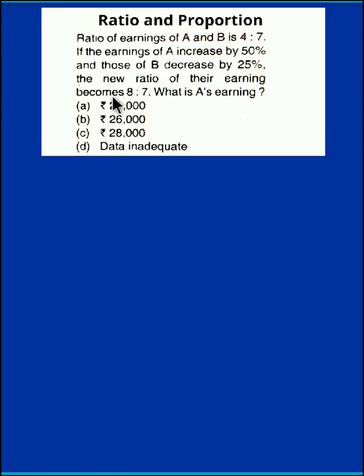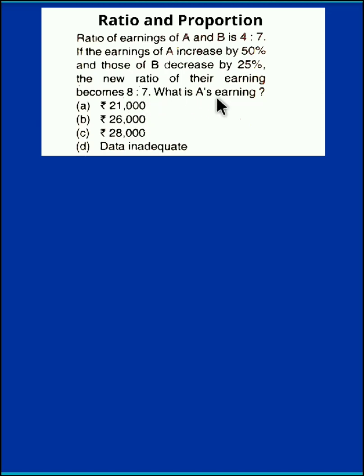Hello and welcome back. We now discuss an example from ratio and proportion. The question is: the ratio of earnings of A and B is 4:7. If the earnings of A increase by 50 percent and those of B decrease by 25 percent, the new ratio of their earnings becomes 8:7. What is A's earning?